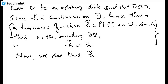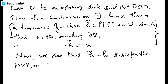H̃ minus H satisfies the mean value property on U. By hypothesis, H satisfies the mean value property, and H̃, being the Poisson integral of U, is a harmonic function, and harmonic functions do satisfy the mean value property. So their difference will also satisfy the mean value property.